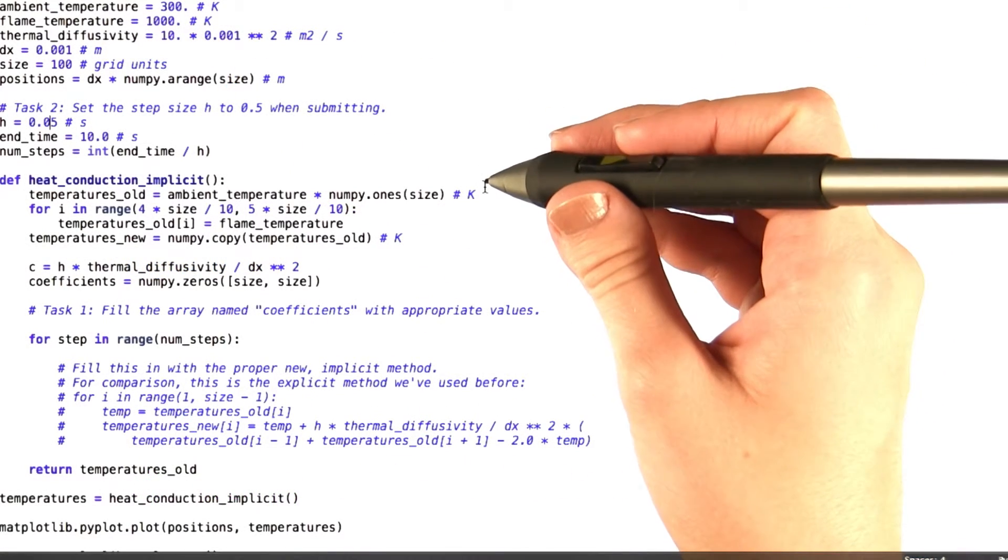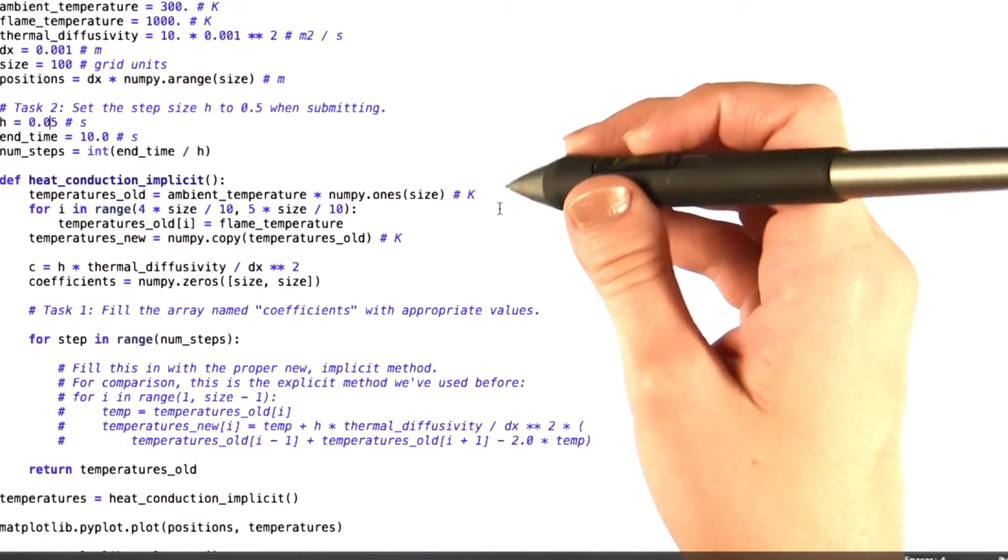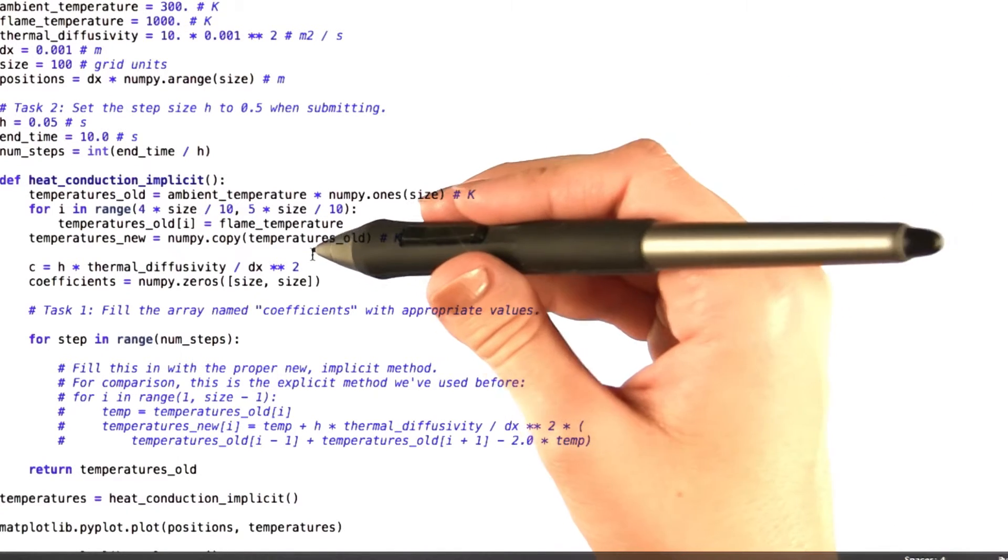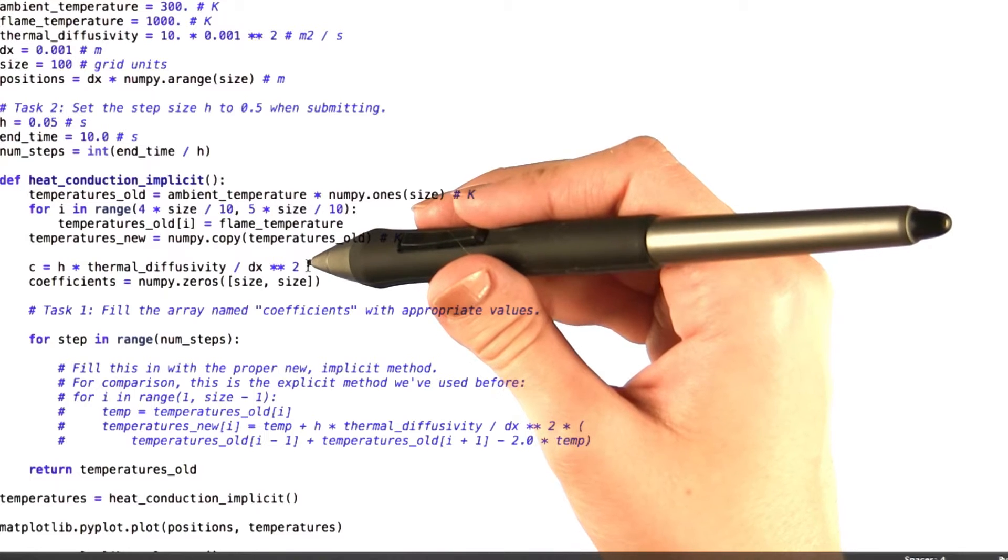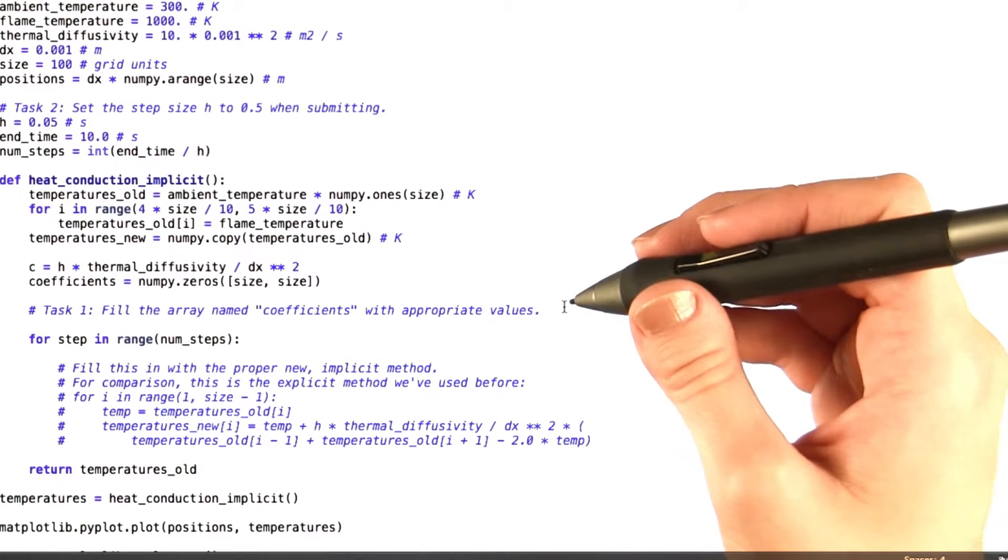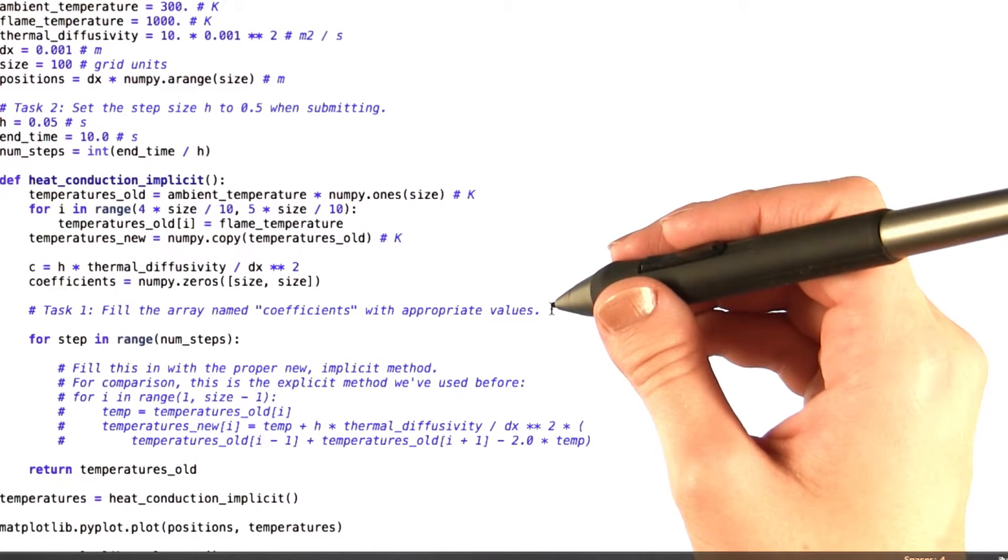Taking a look at our supplied code, you can see that we've created an initial temperature distribution for you. We've also created a parameter for you called c, which if you look back at the finite difference formula, you'll see is going to be very useful for you. As I told you earlier, your first task is going to be to fill in the array named coefficients with the appropriate values.